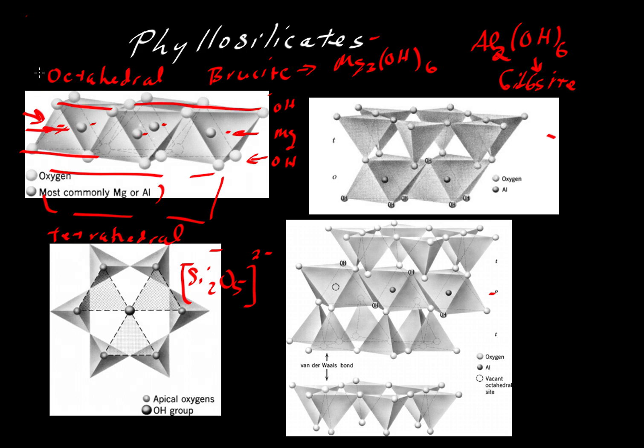For shorthand, we're going to call the octahedral sheets O, and then the tetrahedral sheets we'll simply call T. And then you can imagine linking these up. So here's a case where we have a tetrahedral sheet here and an octahedral sheet here. And we can repeat those over and over again. We'd call those a so-called TO structure.